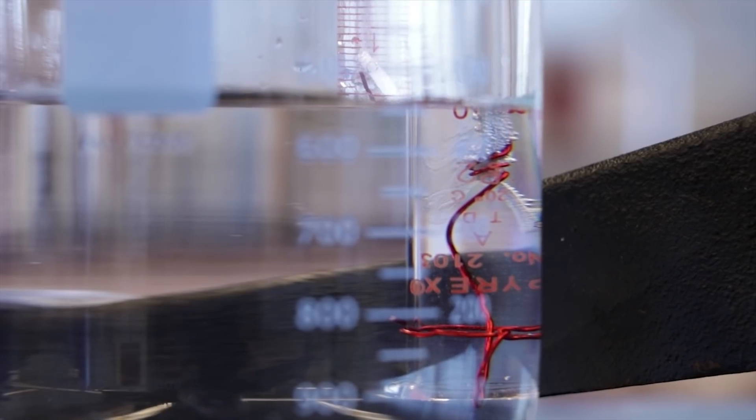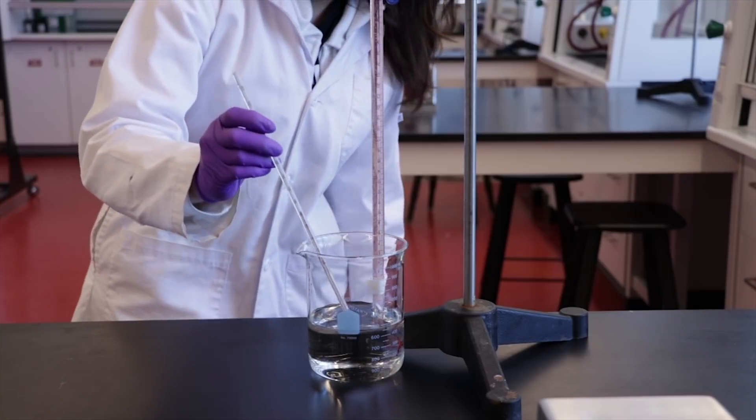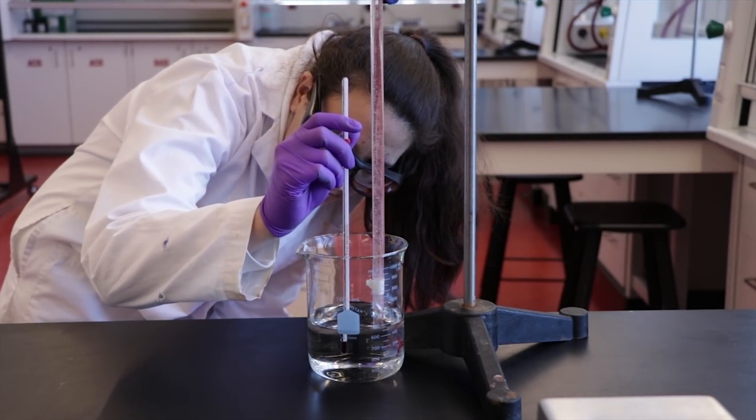The reaction is indicated by bubbling seen around the magnesium ribbon. During the reaction, measure the temperature of water every two minutes and take the average of these readings. Also remember to record the barometric pressure provided by your TA.